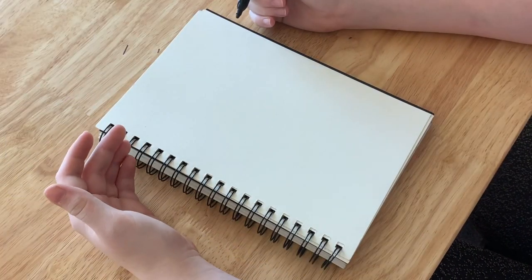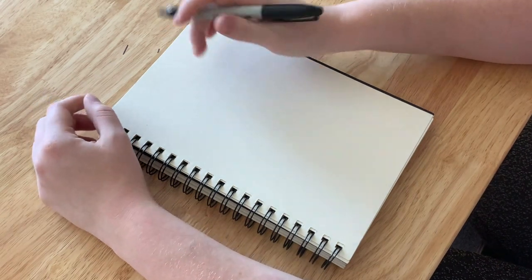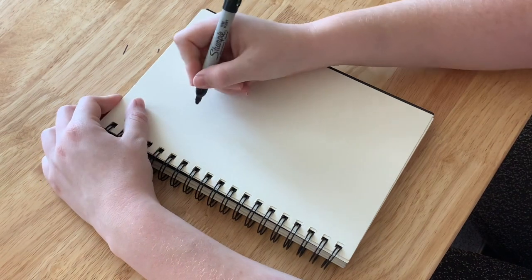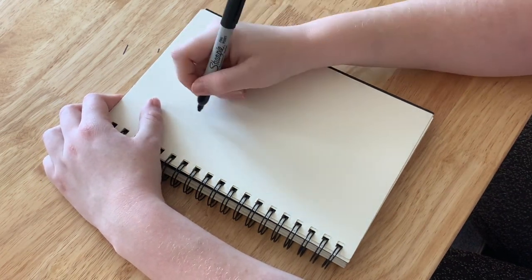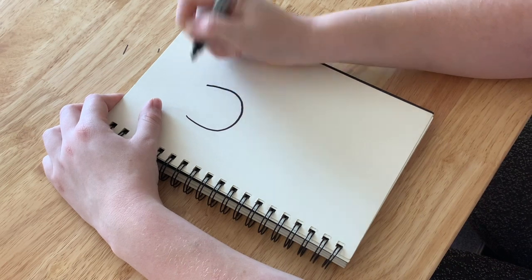To learn how to draw a kitten, kind of how I've been drawing all of my animals that I've been teaching you guys how to draw, a very simple way to draw the head is to start with a big U. So I'm going to go ahead and do that. Start with a big U like this.